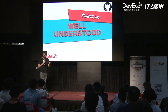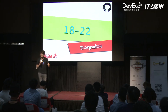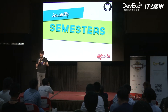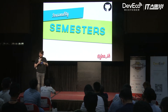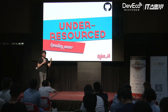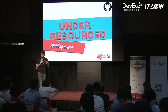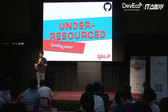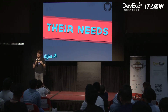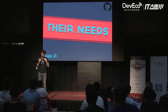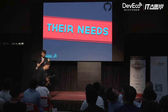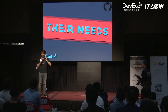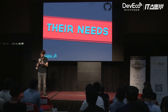With students, we understand them very well. We know, for example, that they're typically between the age of 18 and 22 as undergraduates, and they're going to be aligned to their semesters, which gives us some idea of seasonality. We know that they're under-resourced and can't necessarily pay a huge amount for software. And they may lack access to knowledge and other resources. This tells us a lot about what we can do to serve them. Most importantly, we know and understand their needs.